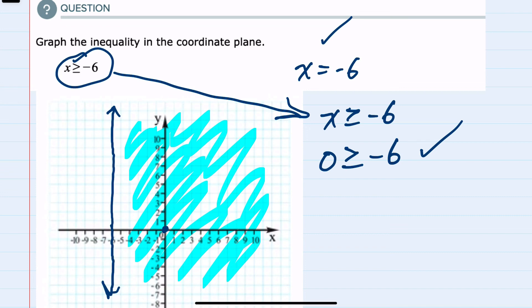But here our test point 0, 0 worked. So we have our line, and any coordinate on this side of the line will work in this inequality.